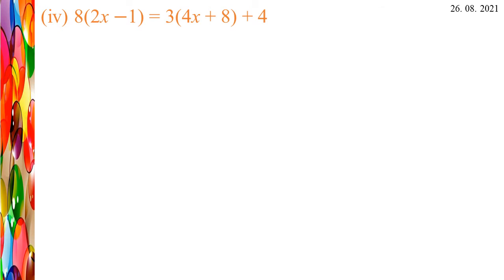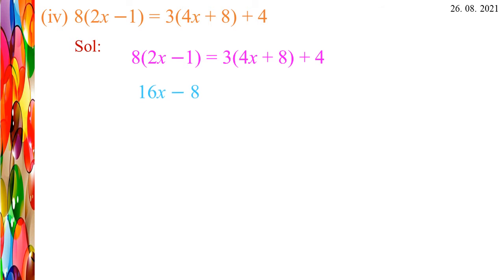Let's see the 4th problem: 8(2X - 1) = 3(4X + 8) + 4. Let us find the solution. Take the equation 8(2X - 1) = 3(4X + 8) + 4. Multiply 8 with inside the brackets: 8 × 2 = 16, so 16X minus 8 × 1 = 8. Then 3 × 4 = 12, so 12X + 3 × 8 = 24 plus 4. We get 16X - 8 = 12X + 24 + 4.